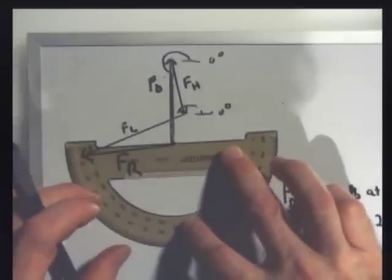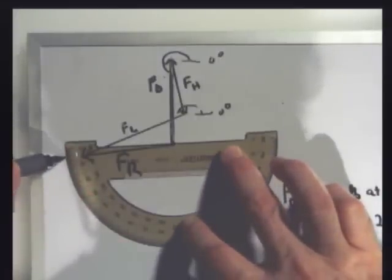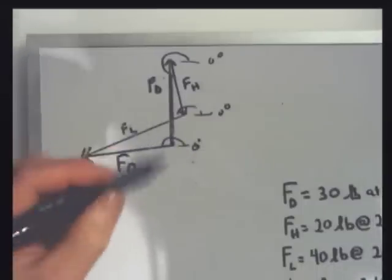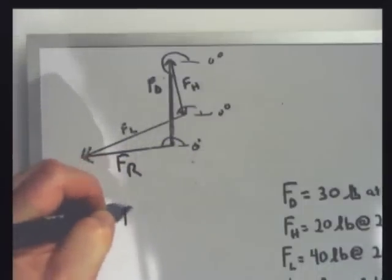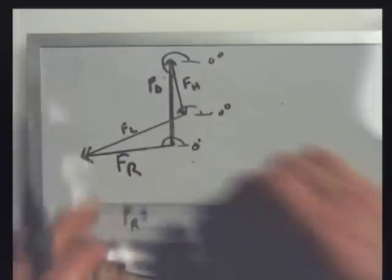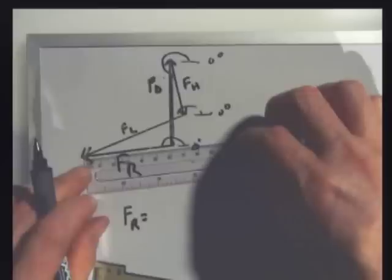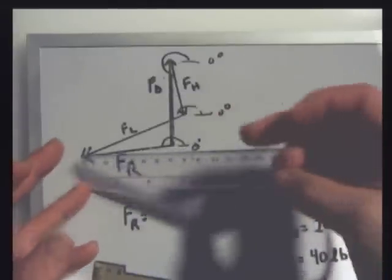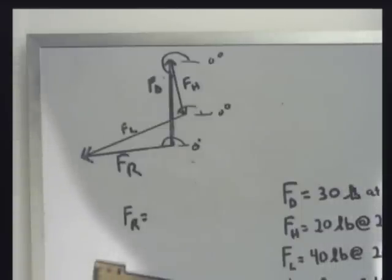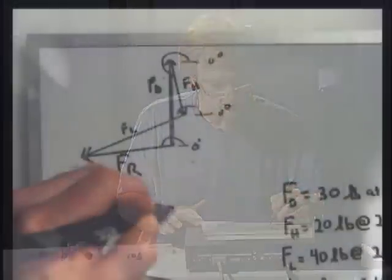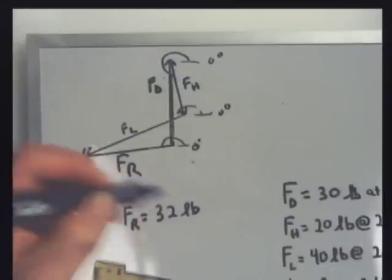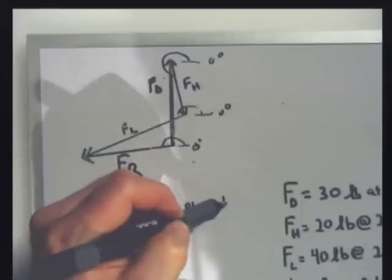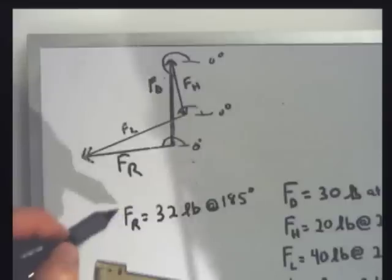Now, the resultant force, the angle is 185 degrees. So I've got 0 degrees right there. That whole angle is 185. So the resultant force has an angle of 185 degrees. It's got a length of 6.4 centimeters. So that's 6.4 centimeters, that's 32 pounds. I just divided 6.4 by 2 and multiplied by 10 at 185 degrees. So that's my resultant force.